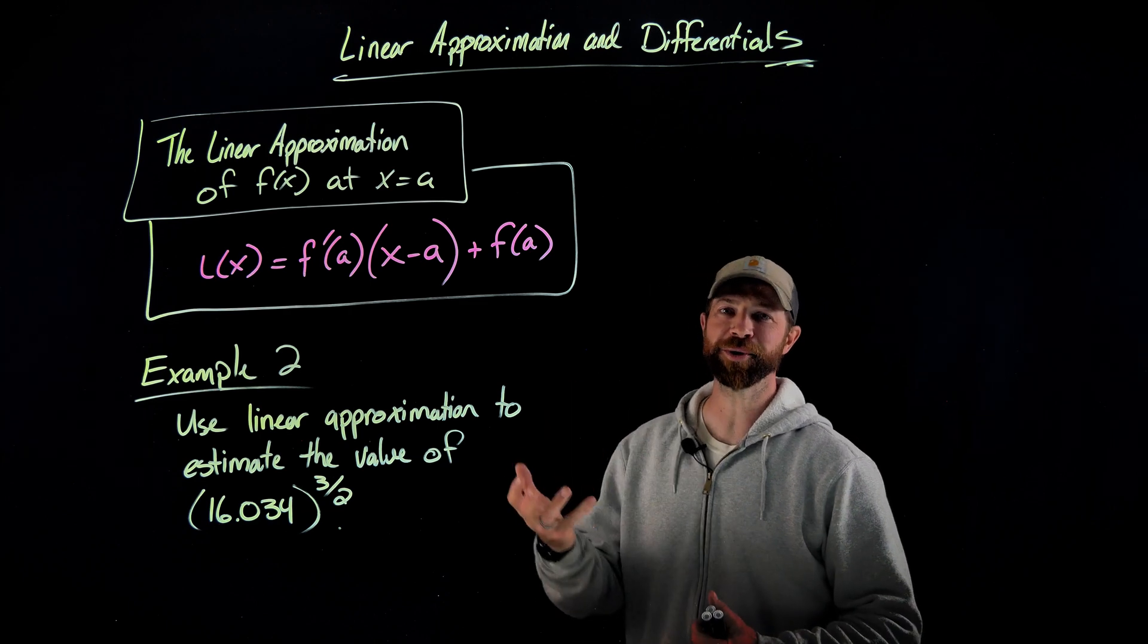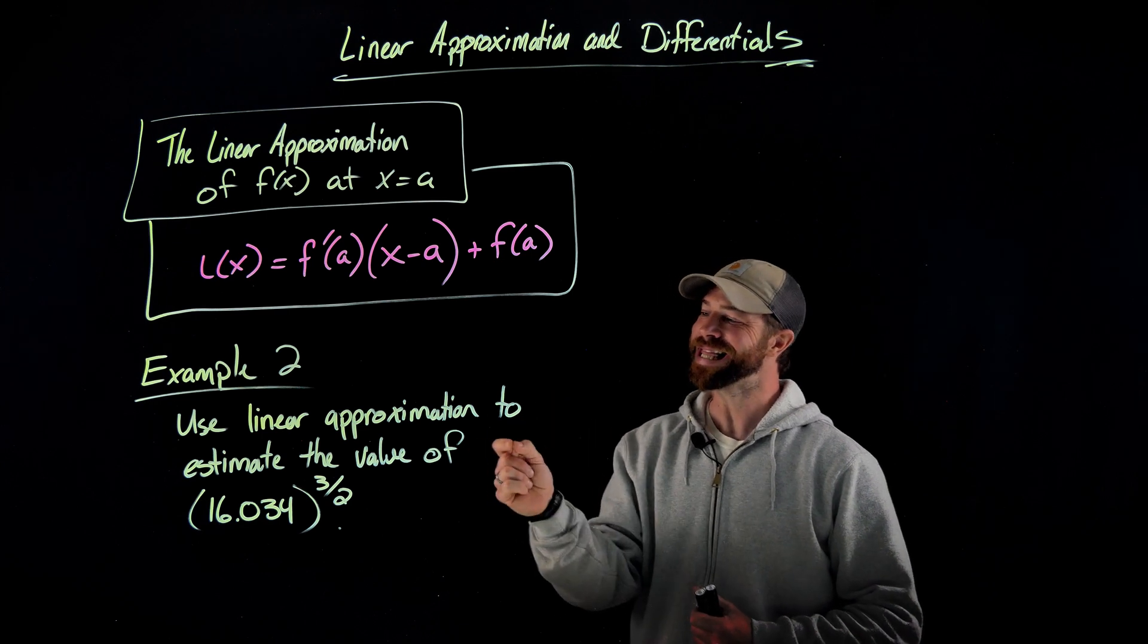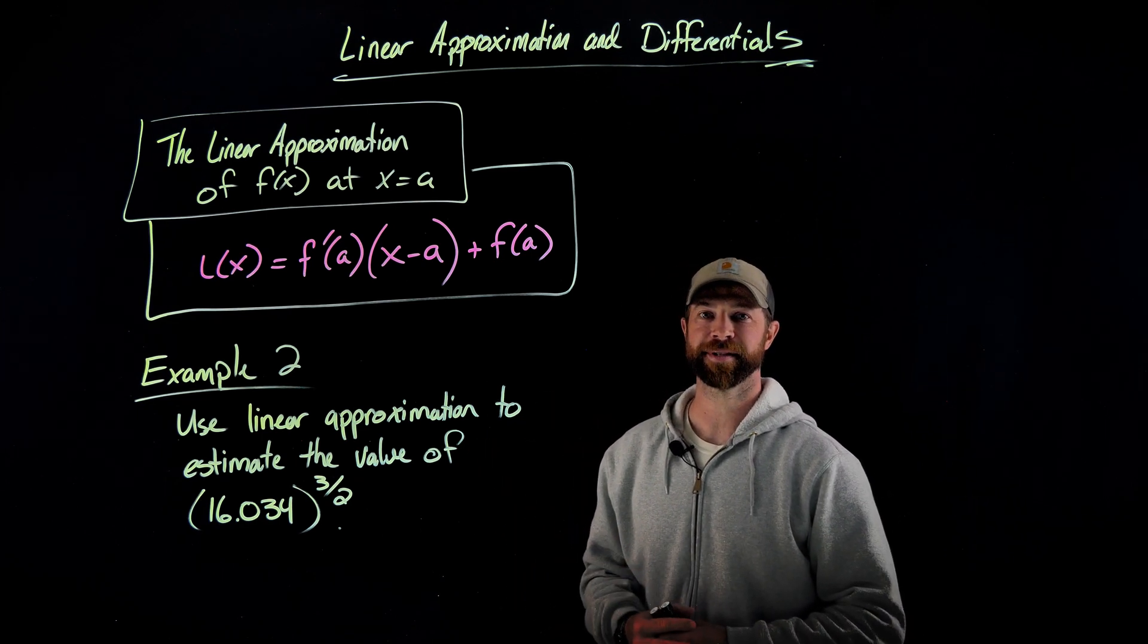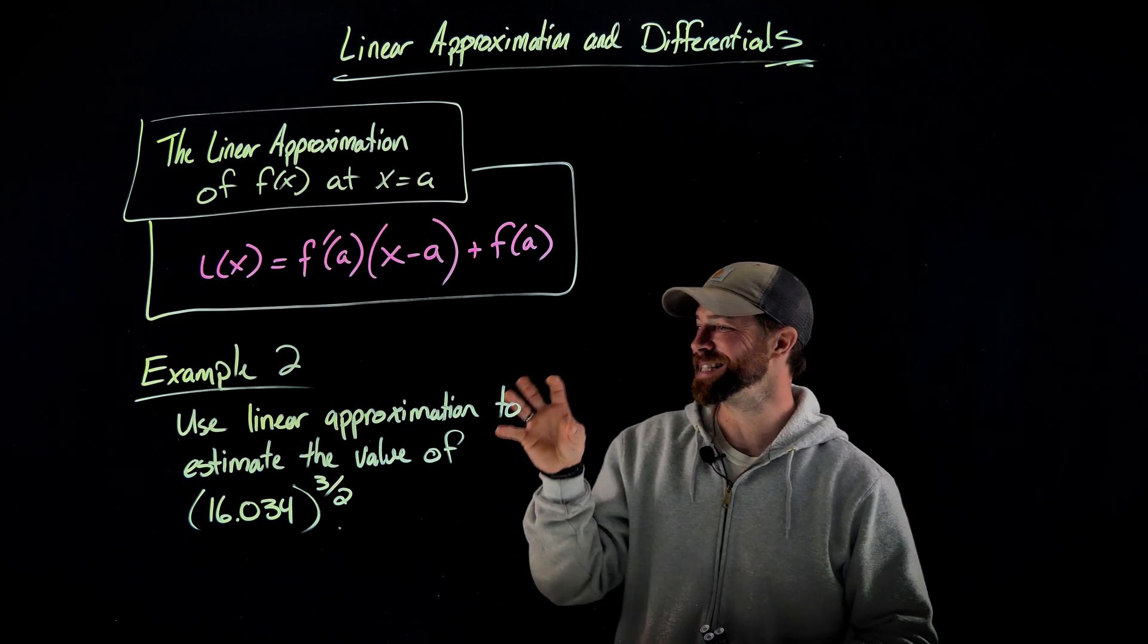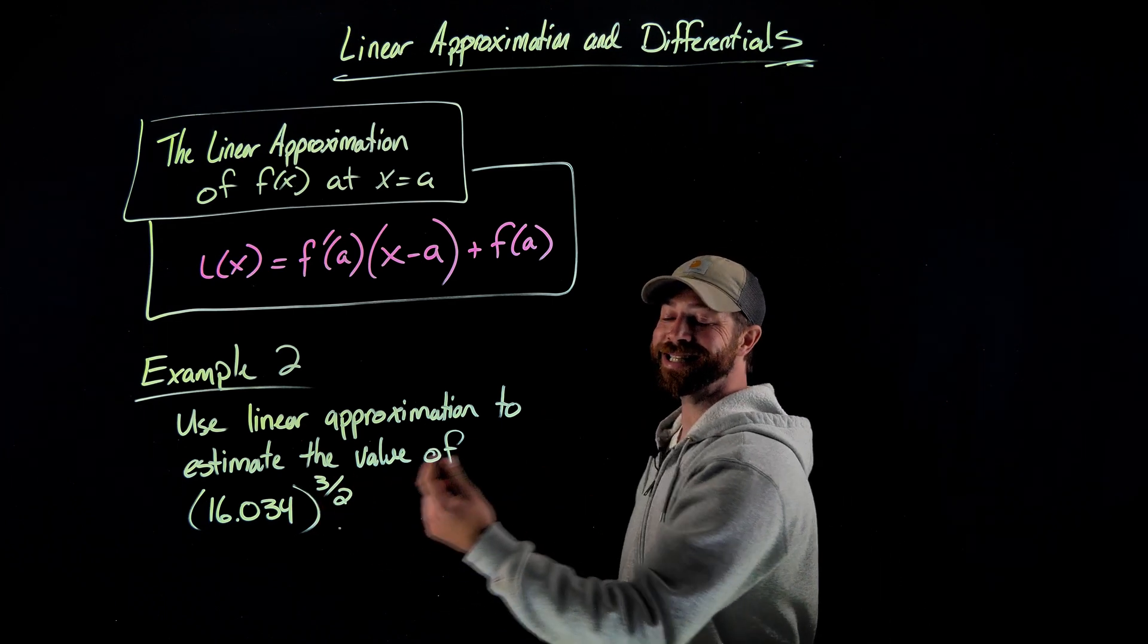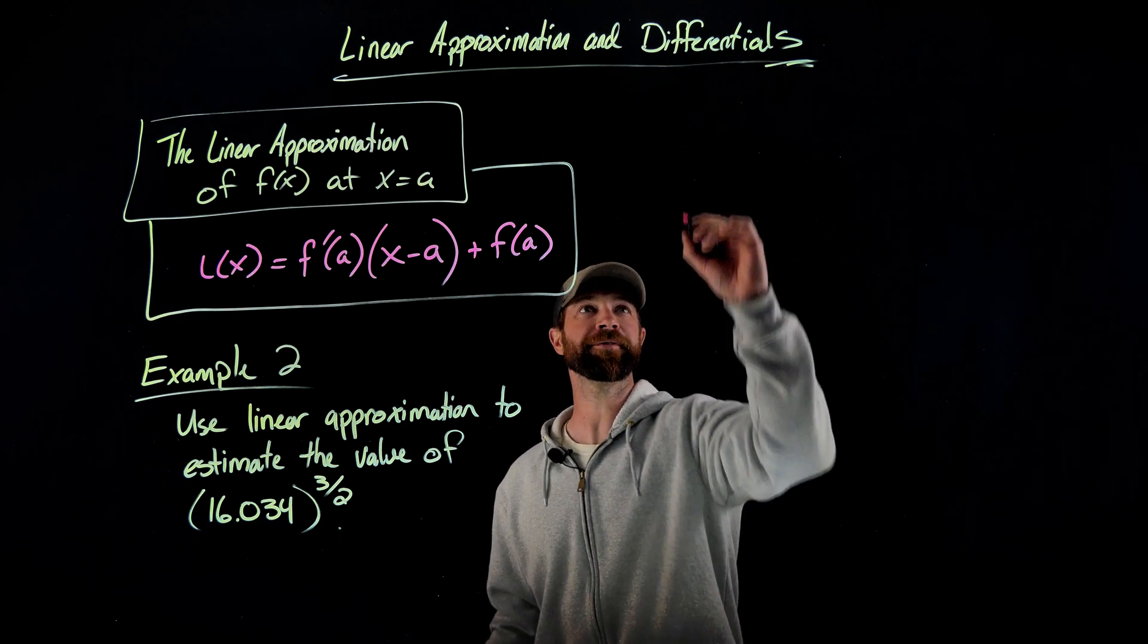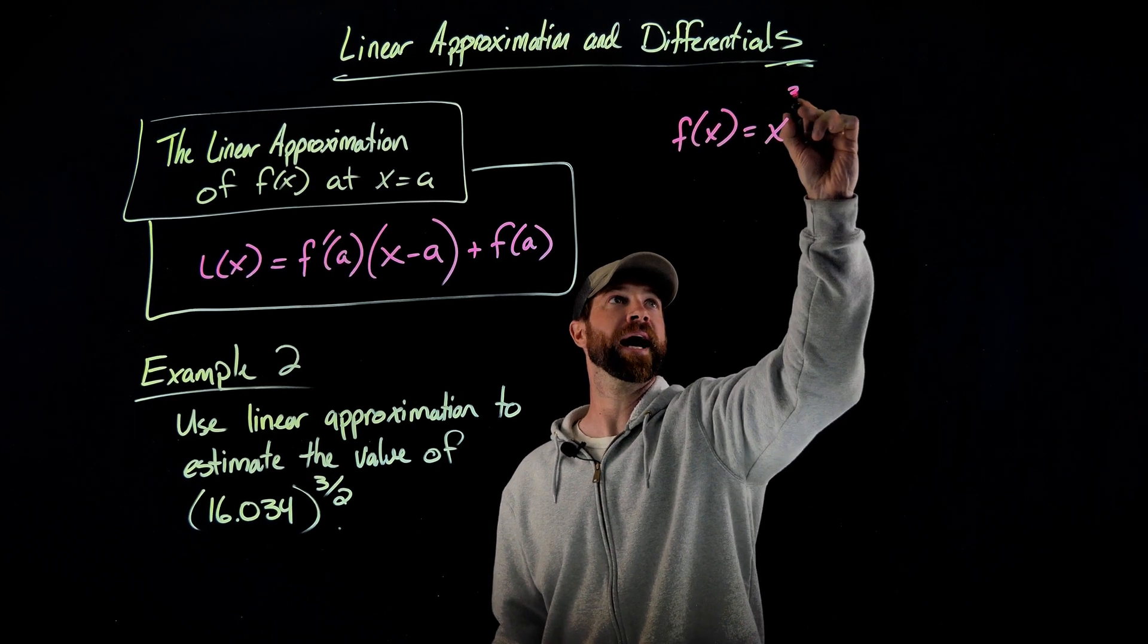Importantly for this question, to use linear approximation, we need this original function f of x. In this case right here, we actually need to generate that ourselves. Though it should be fairly obvious, the f of x we're looking for is the operations in this expression right here that are the difficult ones. In this case, it's raising to the three halves power. So we're going to define our f of x to be x to the three halves.